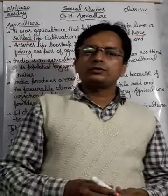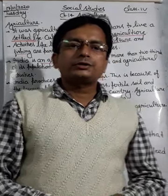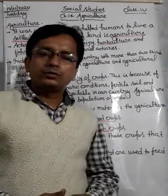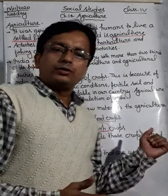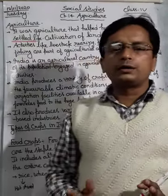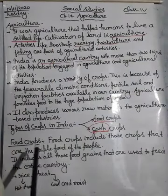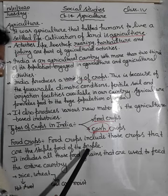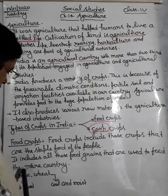Cash crops are grown for cash. We grow these crops, sell them in the market, and get cash — that is why they are called cash crops. Food crops include those crops that are the staple food of the people; they include all the food grains used to feed the entire country.